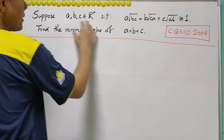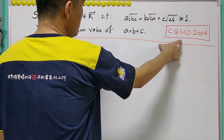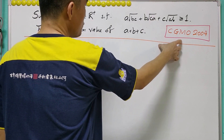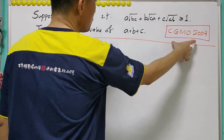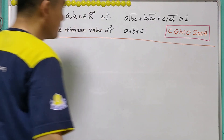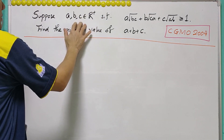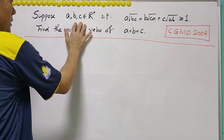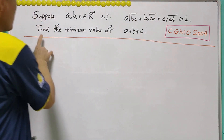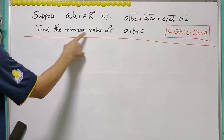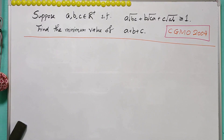This inequality question comes from CGMO, which means China Girls Math Olympiad 2004. Given that A, B, C are positive real numbers such that a certain inequality holds, you are asked to find the minimum value of A plus B plus C.